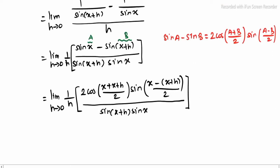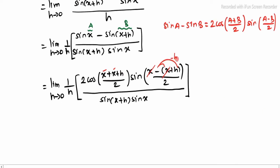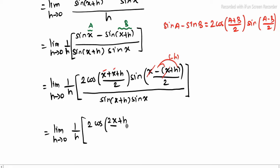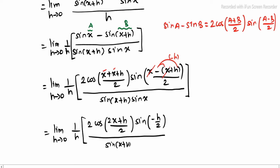Now x plus x becomes 2x, and x minus x will cancel, h minus h becomes minus h. Now limit h tending to 0: 1 by h into 2 into cos of (2x plus h) divided by 2, into sin of minus h divided by 2, whole divided by sin of x plus h into sin x.